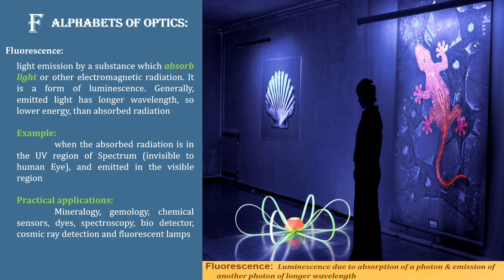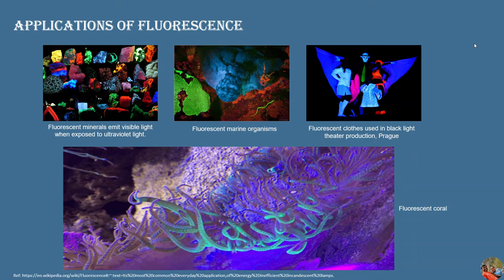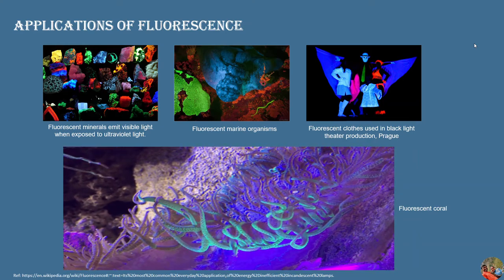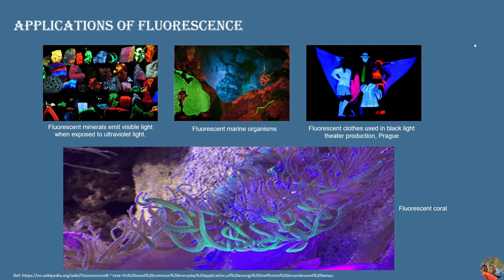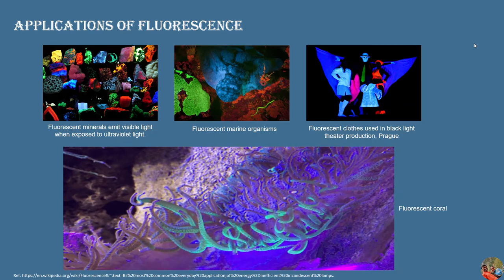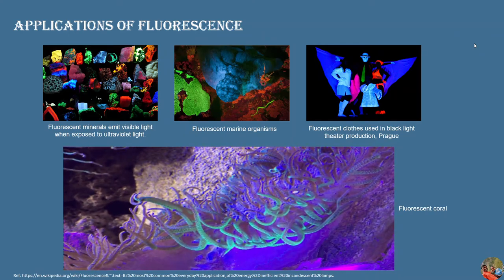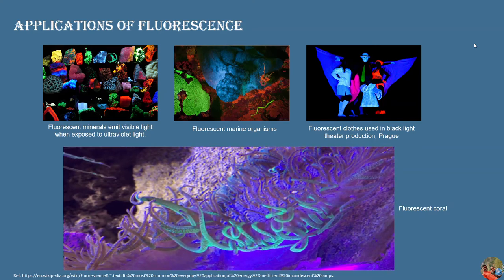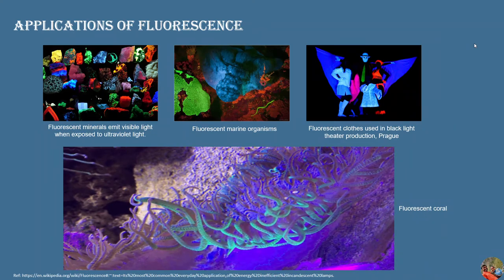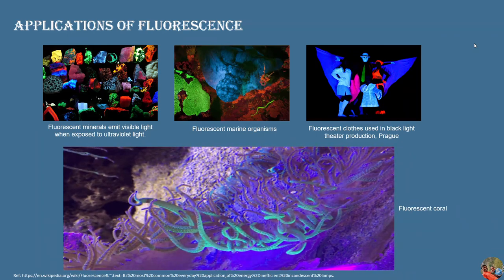Now we can see some applications of fluorescence in daily lives. You can see fluorescent minerals which emit visible light upon exposure to ultraviolet light. We expose ultraviolet light on materials and they emit visible light. Even in marine regions, to capture microorganisms and different kinds of animals, we pass UV light and observe the fluorescence effect. One kind of microorganism known as coral emits visible light by absorbing UV light radiation — it is a fluorescent material with that property.